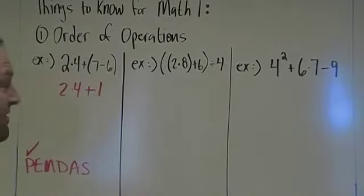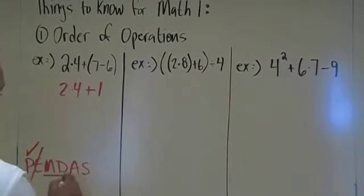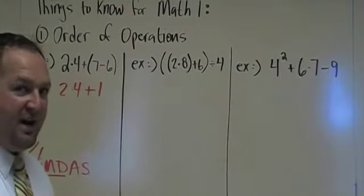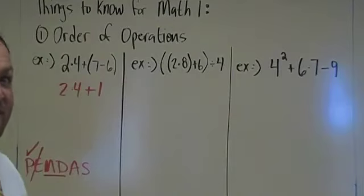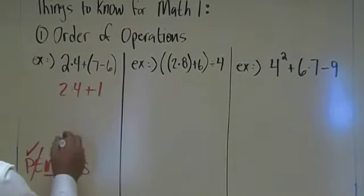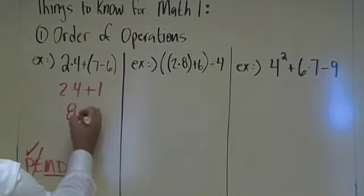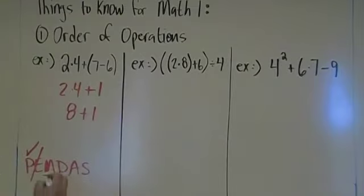Parentheses are taken care of. Exponents, there are no exponents, so I don't have to worry about that. Multiplication and division, it does not matter the order. If it's a division first, divide first. If there's a multiplication first, multiply first. We only have one single multiplication, it's 2 times 4, which gives me 8. Bring down the plus 1. So multiplication and division are taken care of.